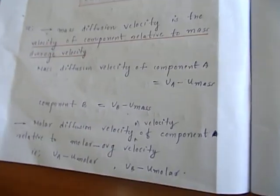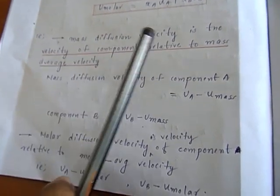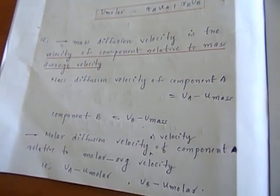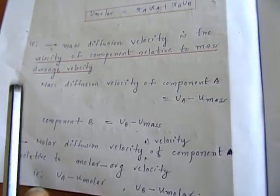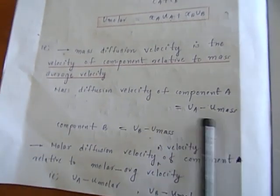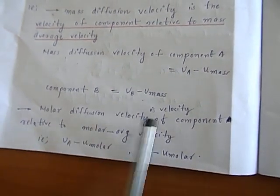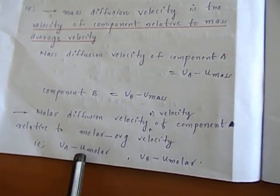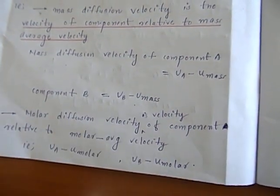From this velocity, we can define two terms: mass diffusion velocity and molar diffusion velocity. Mass diffusion velocity is the velocity of the component relative to mass average velocity, that is U_A minus U_mass. For molar diffusion velocity, it is U_A minus U_molar for species A and U_B minus U_molar for species B.